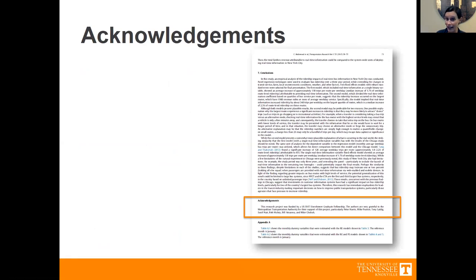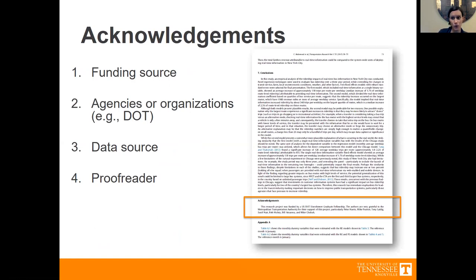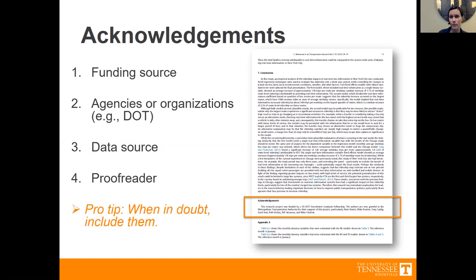Don't forget acknowledgements in your TRB paper or any other paper. This includes who funded it — what was the funding source, is there a grant number? Ask your advisor if needed. Acknowledge any agencies or organizations you collaborated with, like the DOT. Acknowledge whoever gave you your data. And if someone proofread your paper for English or grammar but isn't a co-author because they didn't contribute substantially, acknowledge them here. When in doubt — my pro tip — add them to the acknowledgements. It's better to acknowledge more than less.